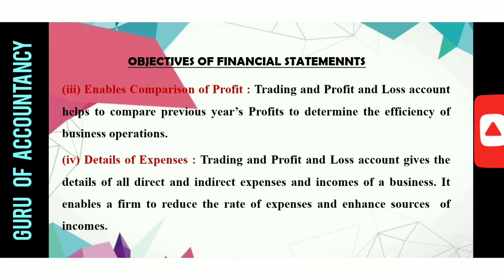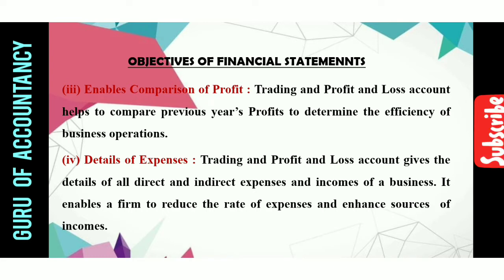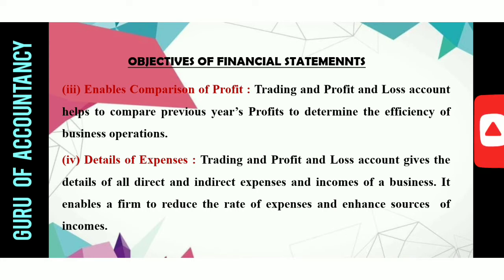Another objective is details of expenses. In the trading account and profit and loss account, we record different types of expenses. This financial statement gives a detailed record of different types of business expenses — all direct and indirect expenses and income. It enables a firm to reduce the rate of expenses and enhance sources of income, and helps decide which expenses should be controlled.